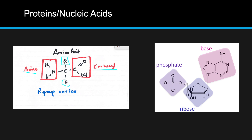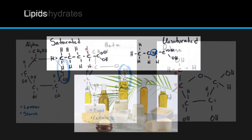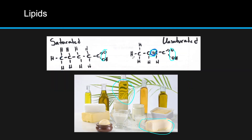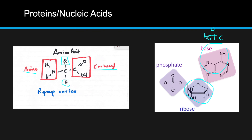For nucleic acids, we're going to have that ribose or deoxyribose sugar backbone, then the bases — adenine, guanine, thymine or uracil, and cytosine — and then a phosphate group on the edge. In carbohydrates and lipids, the main molecules are carbon, hydrogen, and oxygen. When we get to proteins, we start introducing nitrogen, and in some R groups there's sulfur. For nucleic acids, we again have carbon, oxygen, and hydrogen, but now also nitrogen and phosphorus.